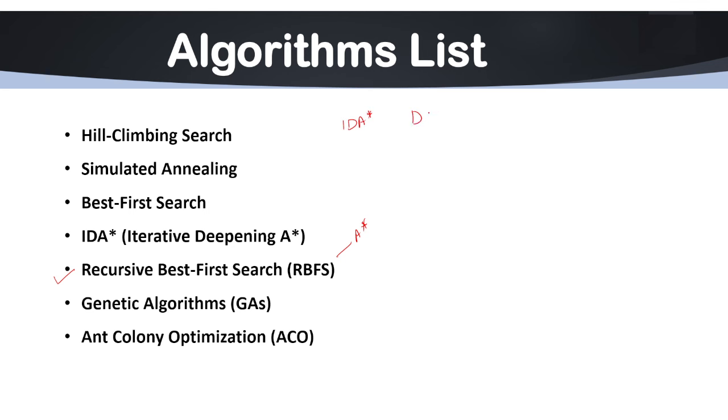IDA* is a combination of depth-first search plus A*. RBFS is a memory-efficient version of A*. RBFS explores nodes recursively and backtracks when the current path exceeds the cost limit. For example, when solving N-puzzle efficiently in memory-constrained environments, RBFS uses the heuristic of misplaced tiles or Manhattan distance.